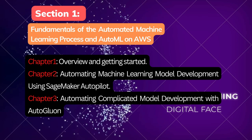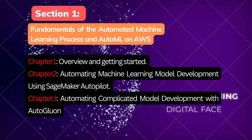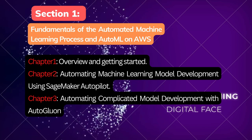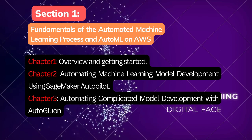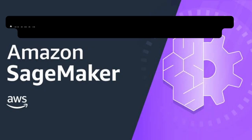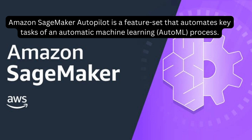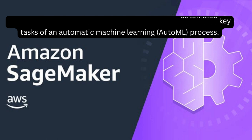Chapter 2 covers Automating Machine Learning Model Development using SageMaker Autopilot. Chapter 3 covers Automating Complicated Model Development using AutoGluon. SageMaker Autopilot is an Amazon feature set that automates key tasks of an automated machine learning process — it explores your data, selects the algorithm relevant to your problem type, and prepares the data to facilitate model training and tuning.